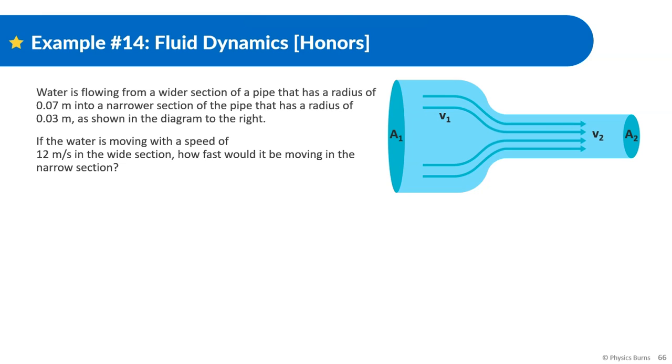Water is flowing from a wider section of a pipe that has a radius of 0.07 meters into a narrow section of the pipe that has a radius of 0.03 meters as shown in the diagram to the right. If the water is moving with a speed of 12 meters per second in the wide section, how fast would it be moving in the narrow section? So a few things here. One thing to know is they don't give us the area. They give us the radius of the circle.